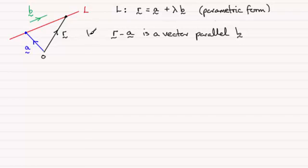So if I just say but R minus A then is a vector parallel to B, then we can say that another form for the equation of the line L will be that the vector R minus A crossed with the vector B, because they're parallel, must equal zero.